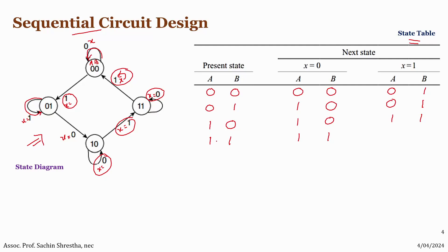When input X equals one, the state changes from 11 to 00. That's how we can derive the state table from the state diagram.